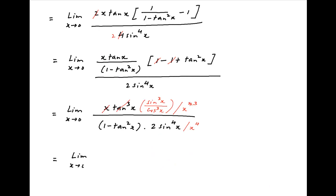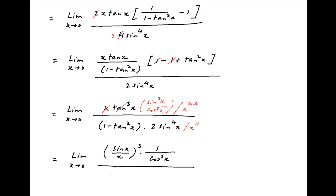Therefore this limit can be rearranged as limit x tending to 0, (sin x / x)³ multiplied by (1 / cos³x), divided by 2 times (sin x / x)⁴ times (1 minus tan²x).